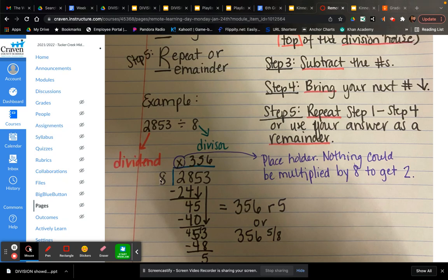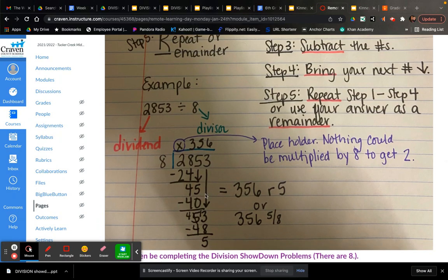I put an X there because there's nothing I can multiply eight by to get two. That way I make sure I shift all my numbers over. I multiply eight times three, get 24, subtract that, bring my next number down, and I bring it all the way down until I stop because I don't have any numbers.